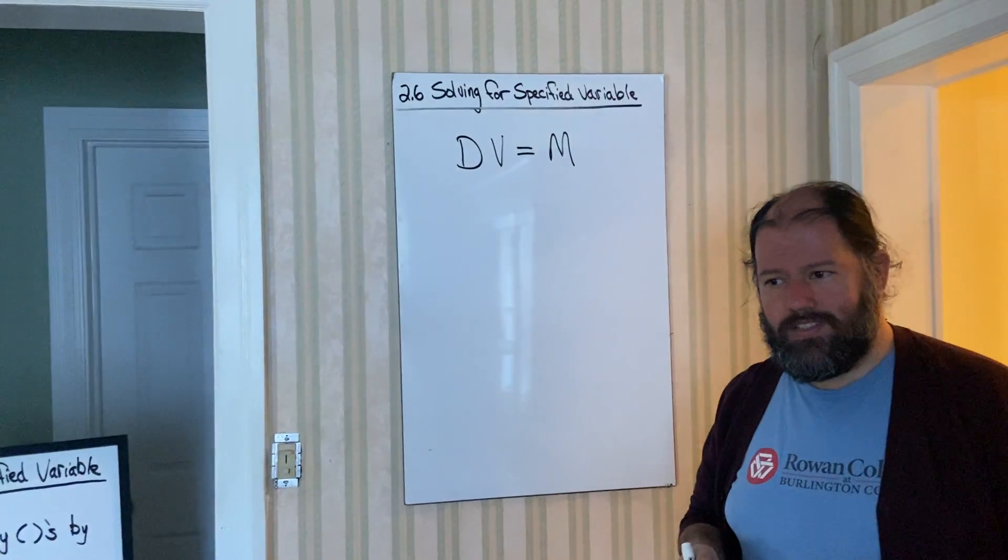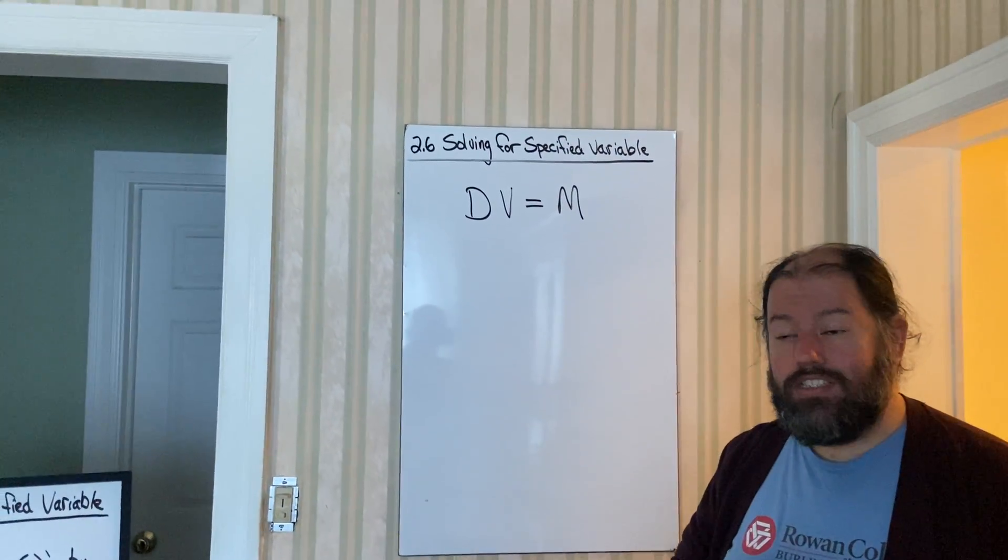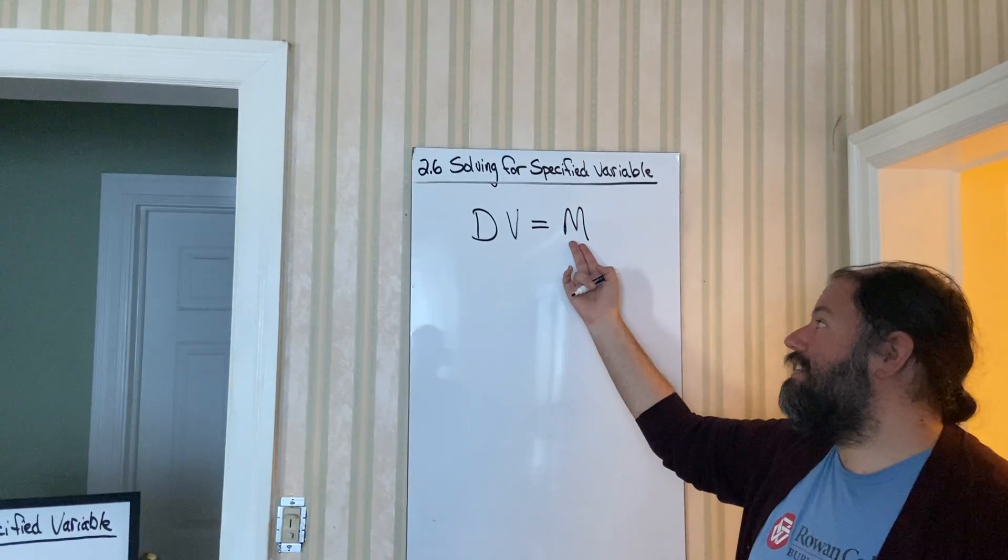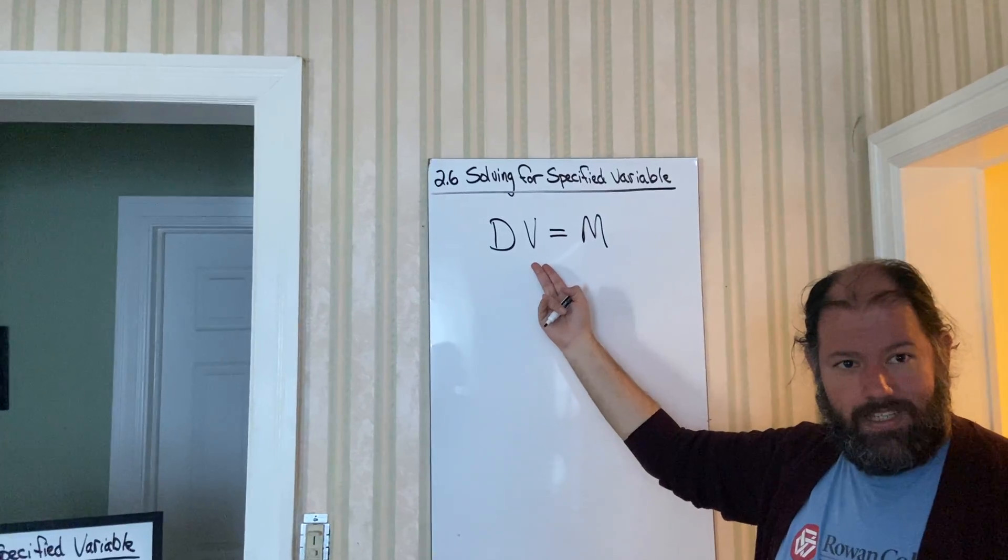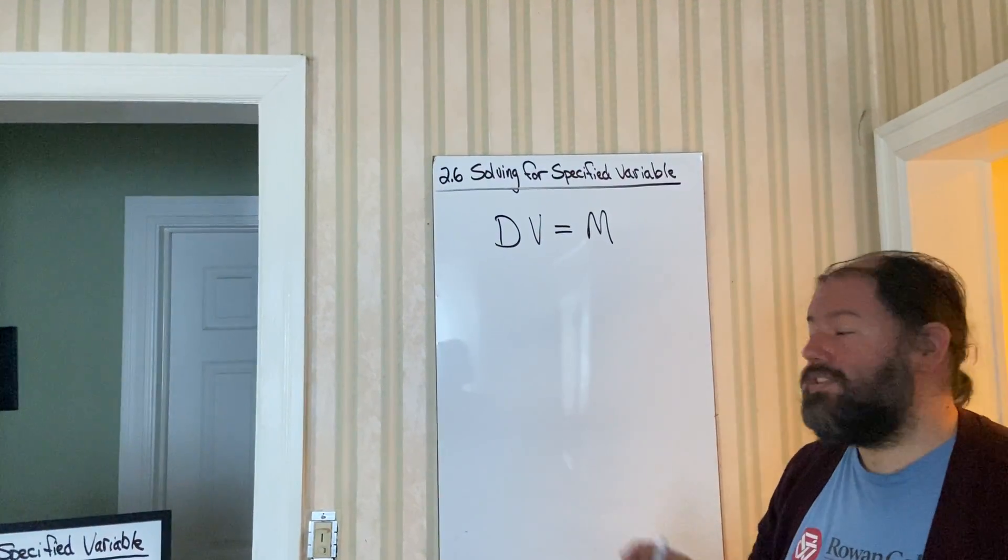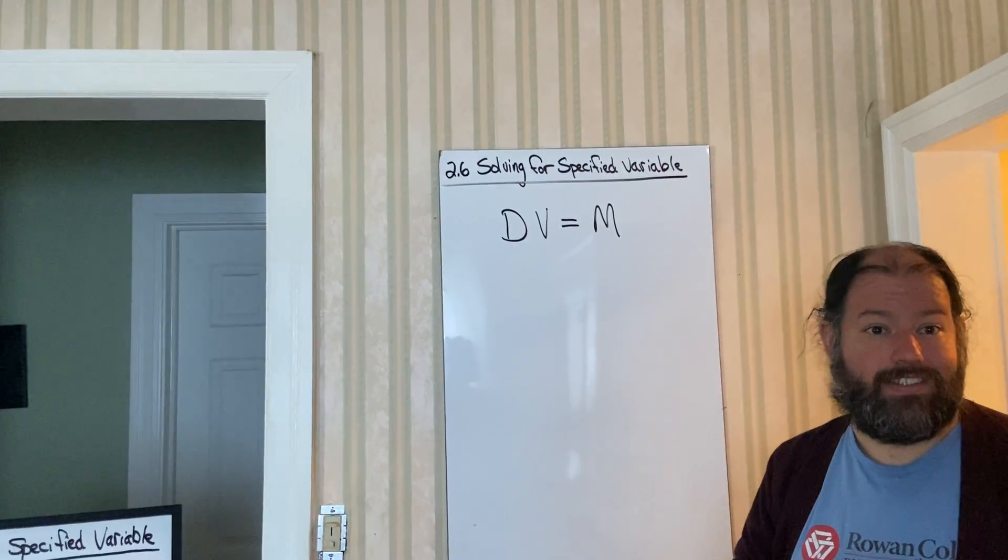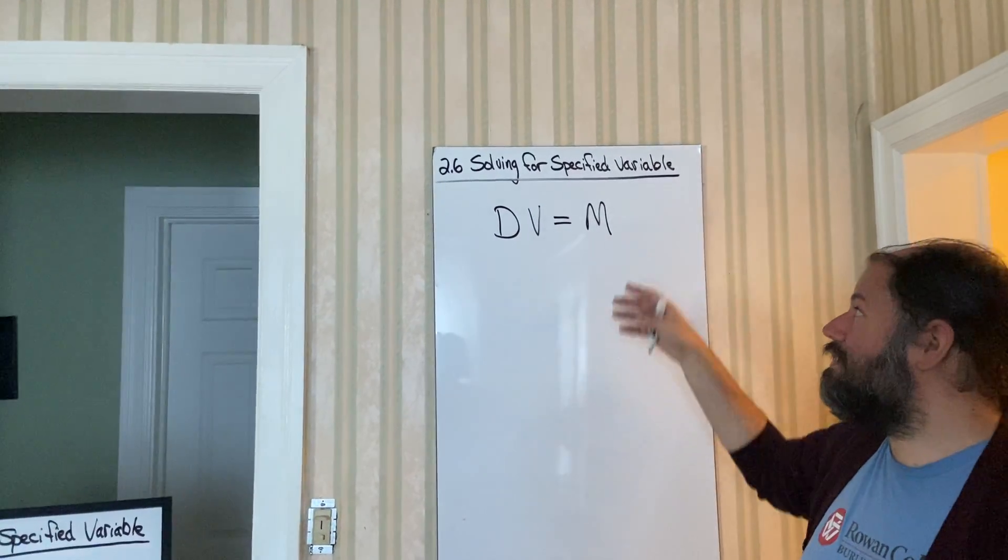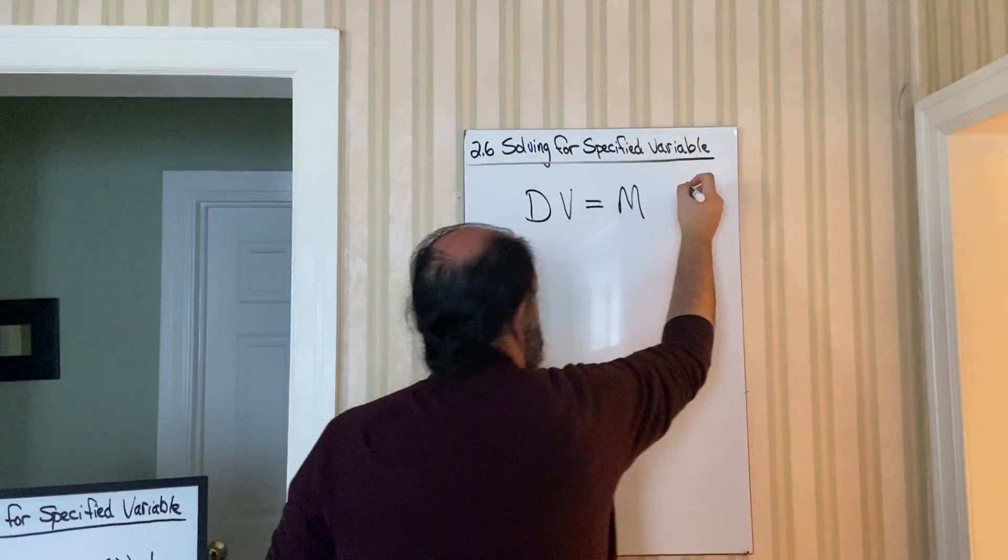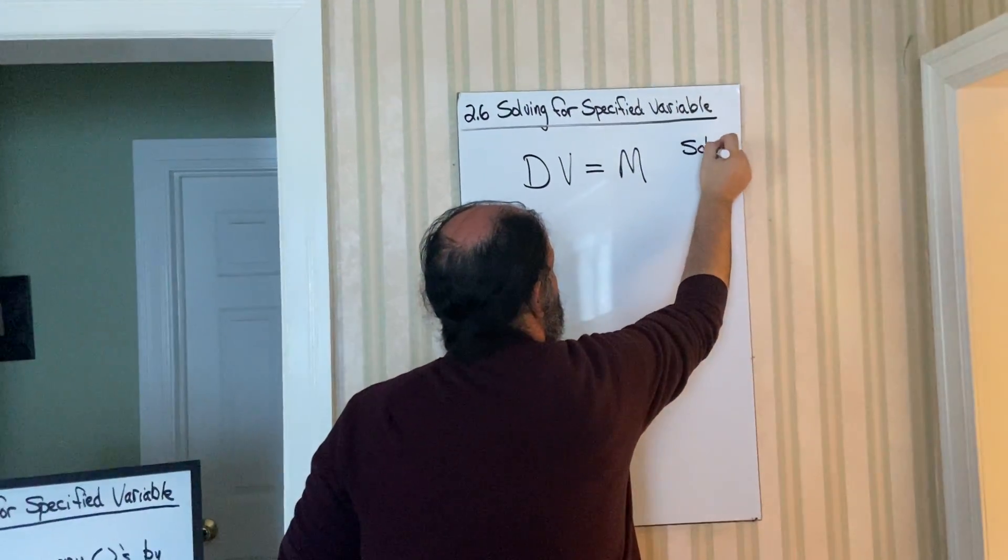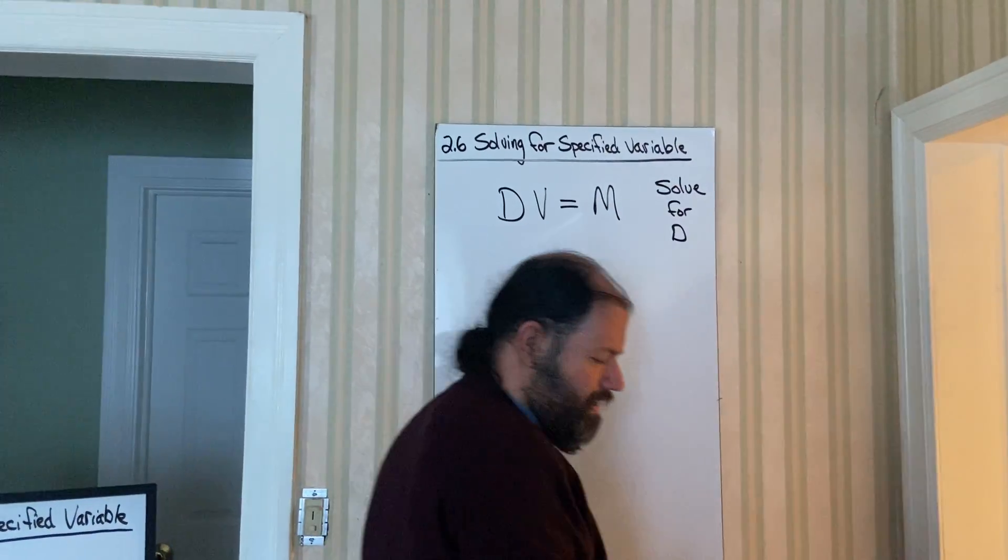What we're trying to teach you is that we can tweak this equation to solve for a different letter than M. We could solve for the letter D, or we can solve for the letter V. In these problems, they're going to give you a formula. You don't need to know what the formula stands for. What you have to realize is that they're going to ask you to rearrange this, and they'll say, solve for, let's say, D density.